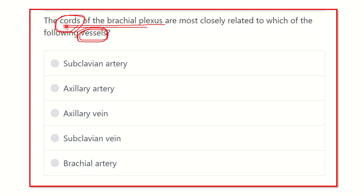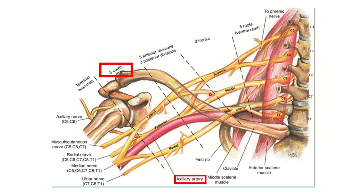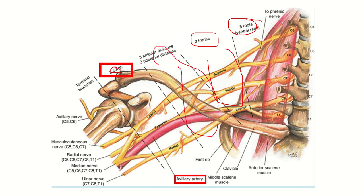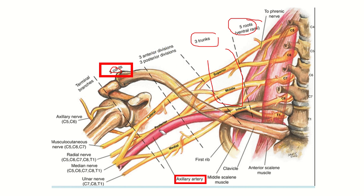Here we can see the yellow structure — that is the brachial plexus. First, the five roots of the brachial plexus, then three important trunks, then the divisions, then the cord. At the level of the cord, we can see a very large blood vessel, and that blood vessel is an artery.